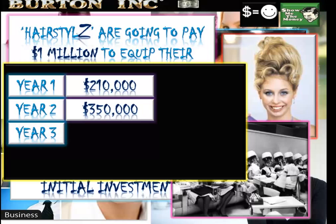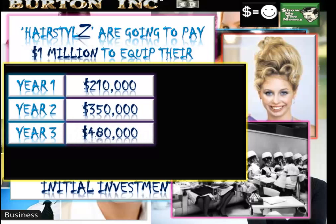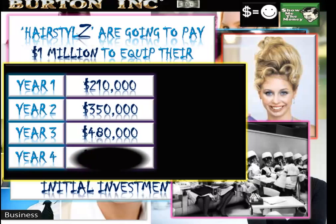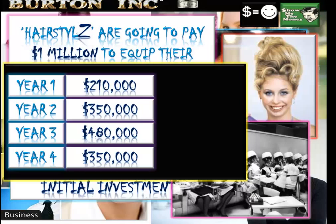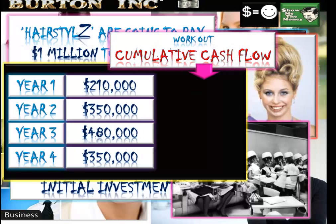The net cash flows — that's cash flow with operating costs taken out — are: Year 1: $210K, Year 2: $350K, Year 3: $480K, and Year 4: $350K.